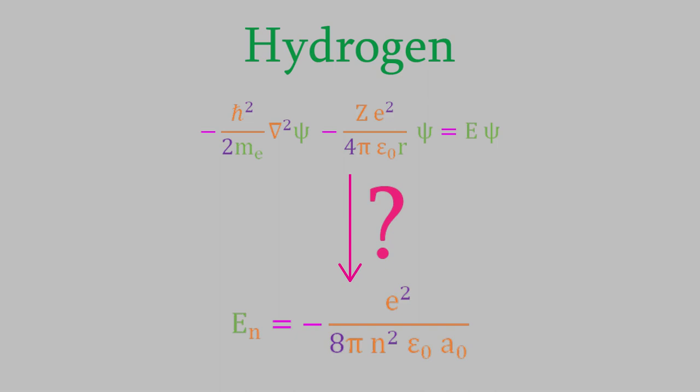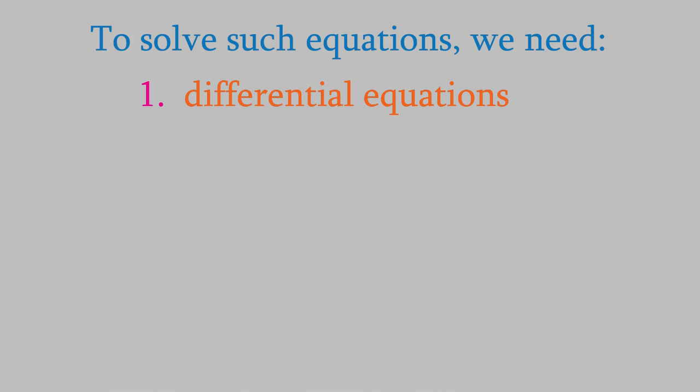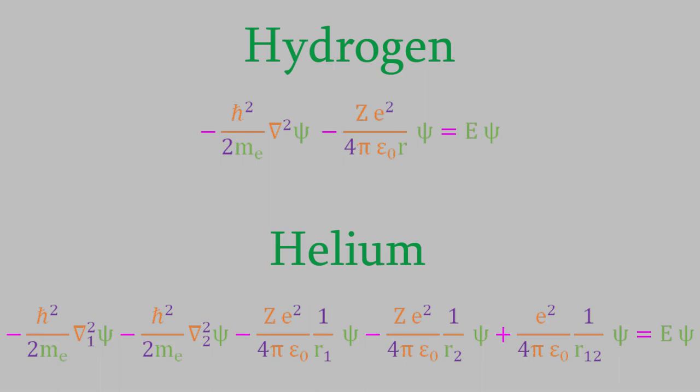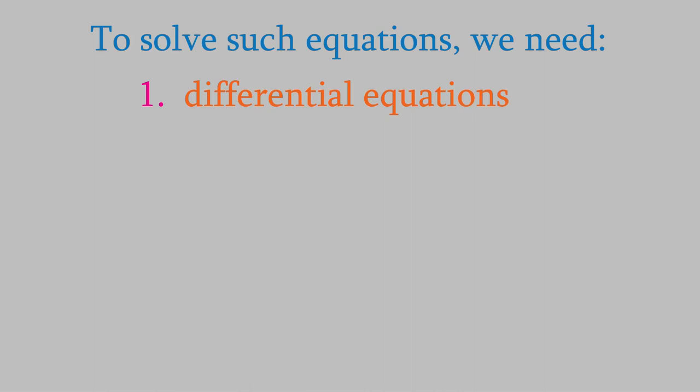As you know, many equations in quantum mechanics require us to know how to solve differential equations. However, we also saw that as the number of electrons in a system increases, the differential equation we have to solve gets larger. And as we'll see soon, the number of terms in the differential equation increases very rapidly as we look at larger and larger molecules. For that reason, we often don't always use the techniques of differential equations to solve these.